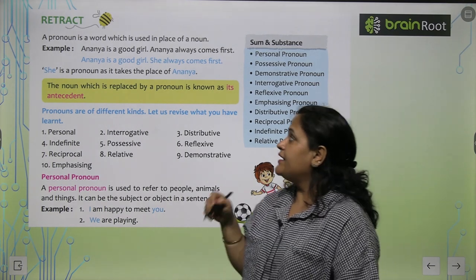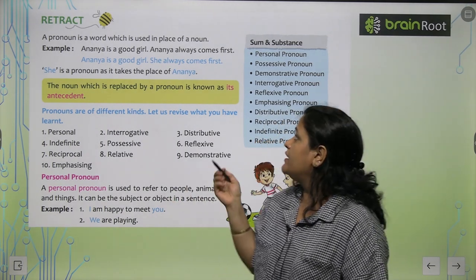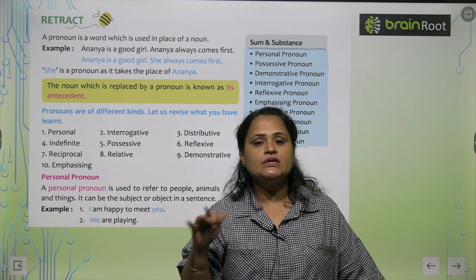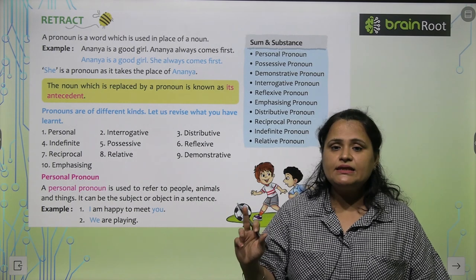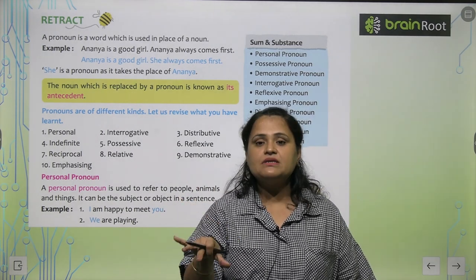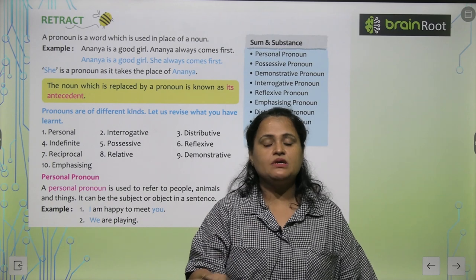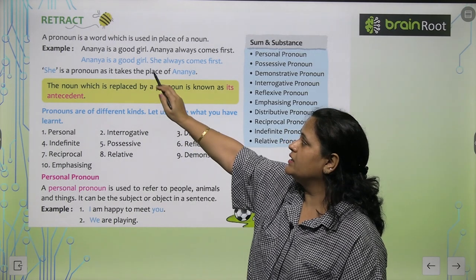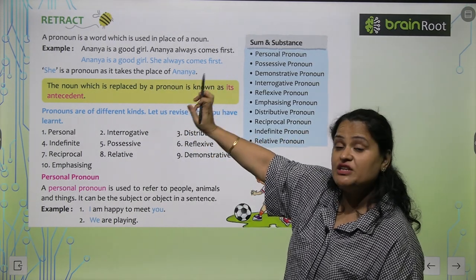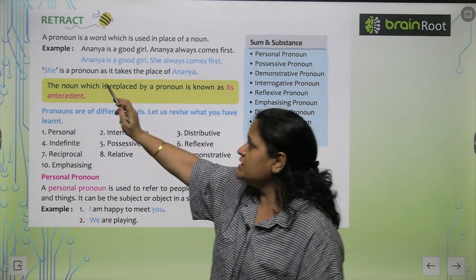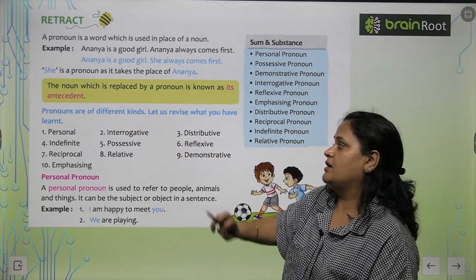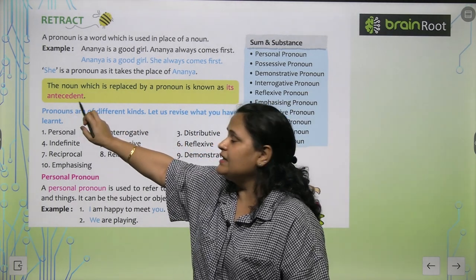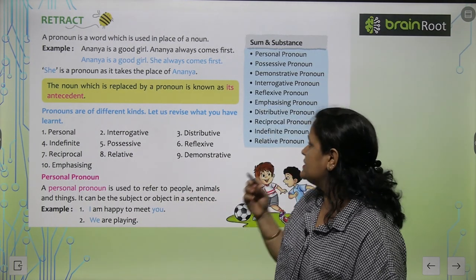So for example, Ananya is a good girl, Ananya always comes first. We don't need to use the noun repeatedly in a sentence. If the same person's name comes two times, we can use a pronoun the second time — like 'Ananya is a good girl, she always comes first.' She is a pronoun as it takes the place of Ananya. The noun which is replaced by a pronoun is known as its antecedent.